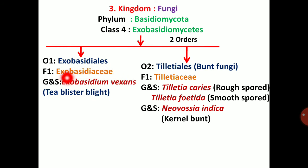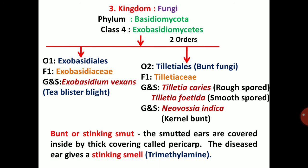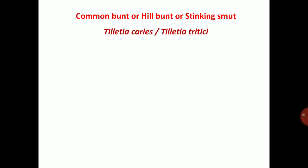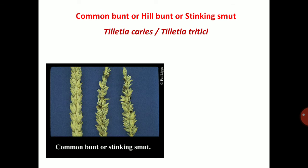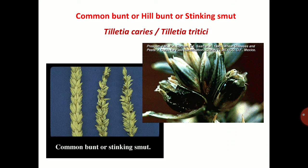In the Ooty region, Tea Blister Blight is well known because of the low temperatures. T-blister blight is one of the important diseases in the Ooty region. Bunt or stinking smut: the smutted ears are covered by a thick covering called pericarp. The diseased ear gives a stinking smell through trimethylamine content. Common bunt, hill bunt, or stinking smut is Tilletia caries or Tilletia tritici. Bunt-infected heads produce smut grains with a foul odor — but it looks like smut. The infected grains are larger than healthy ones.